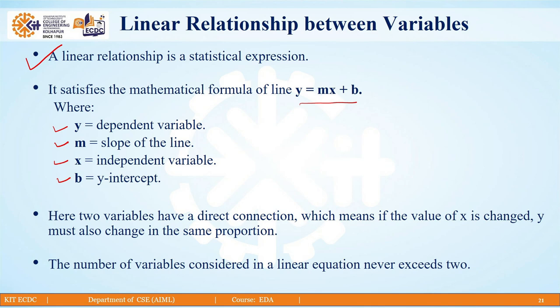Let us understand some more about the linear relationship between variables. One important point is that whenever we talk about a linear relationship, we should have at most two variables in the picture. When we have two variables, a change in one of the variables will be reflected in the other variable. If the value of x changes, the value of y will also change in a similar proportion.